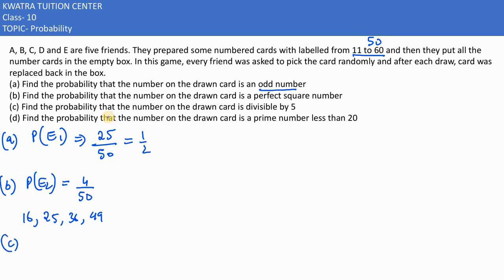In this part, they are saying total number of cards that are divisible by 5. So which will be 5? 15, then 20, then 10 will be 50. So it would be P(E3) would be 10 by 50 which is 1 by 5.